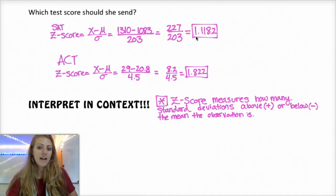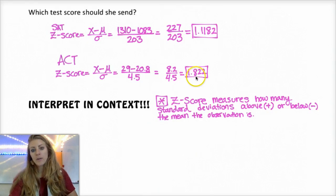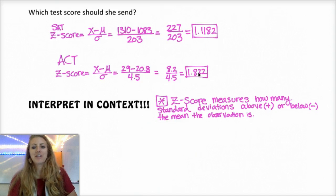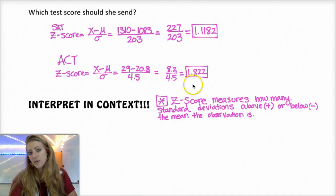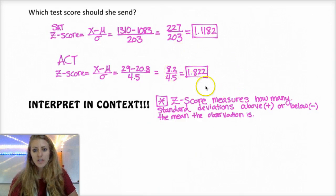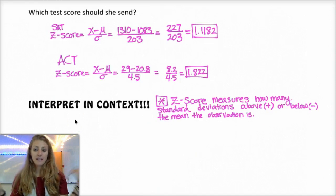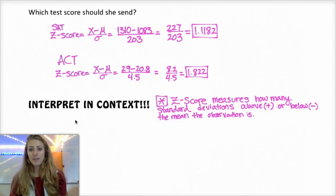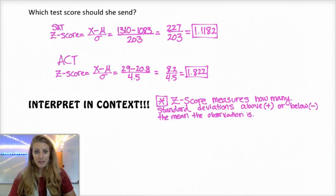So in this case, Abby has a score on the SAT that's 1.12 standard deviations above the mean, and an ACT score of 1.82 standard deviations above the mean. So she actually did better on the ACT because she is doing better comparatively to other people who took the test. So she should definitely send this score in. So whenever somebody asks you to interpret the Z-score, it's how many standard deviations above or below the mean the observation is. And so what's nice is it kind of gives you a standardized value to be able to compare different tests and also to help you compare yourself to how other people did.